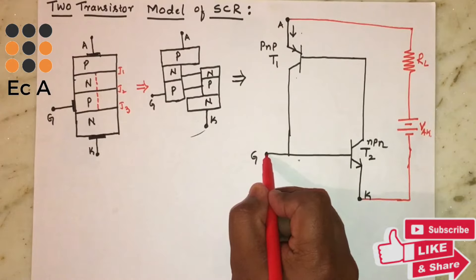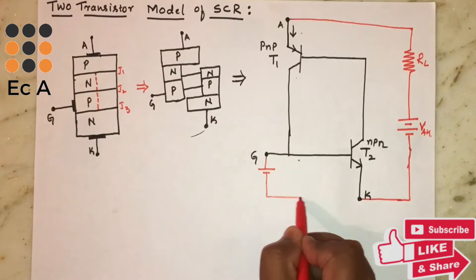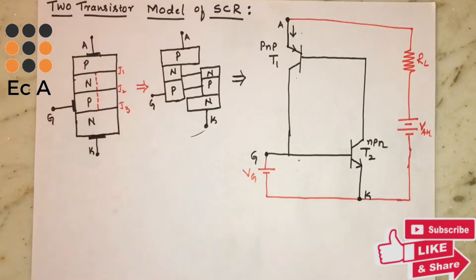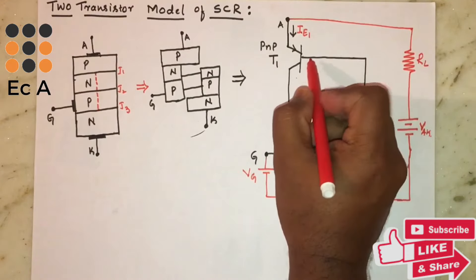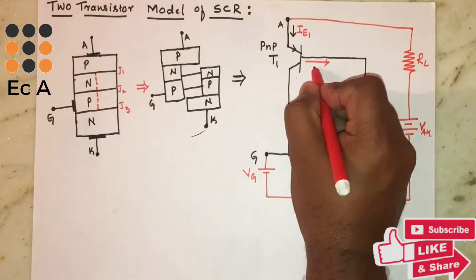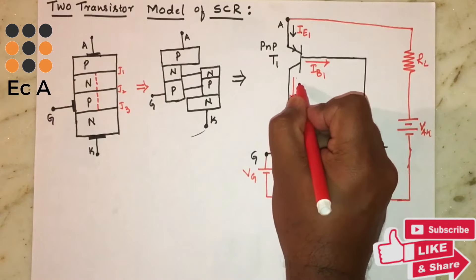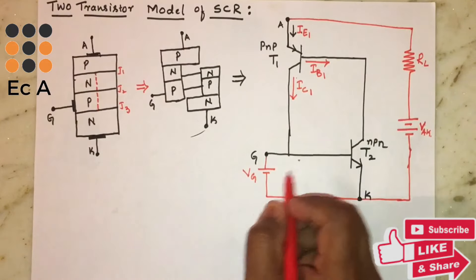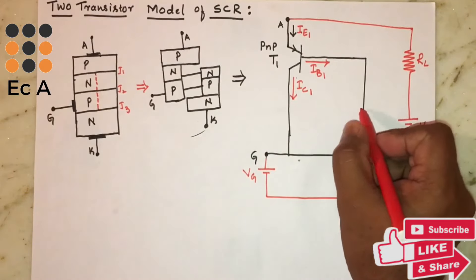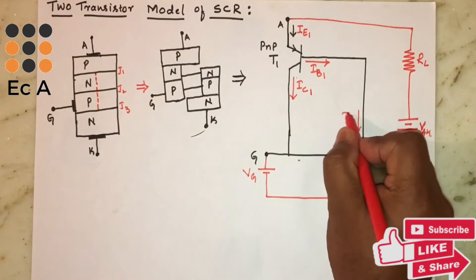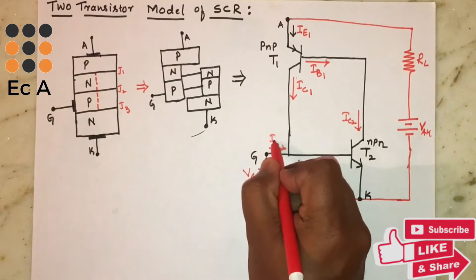Now let us apply some positive voltage towards the gate — positive towards gate and negative terminal connected to cathode — so let us call this VG. This is the emitter current of transistor T1, written as IE1. The base current of transistor T1 is IB1, and the collector current of transistor T1 is IC1. The same current will flow through the collector terminal of transistor T2, written as IC2, and due to this voltage, gate current IG is produced.